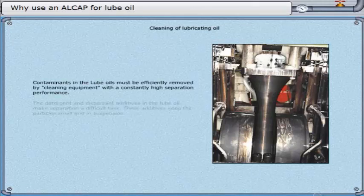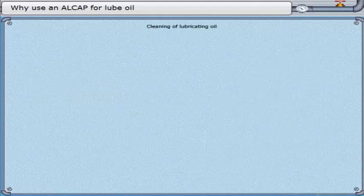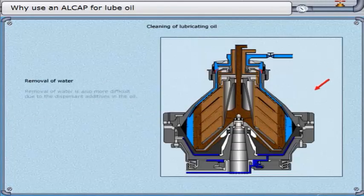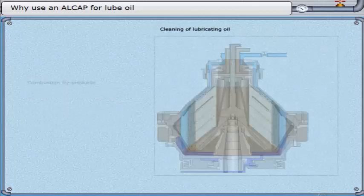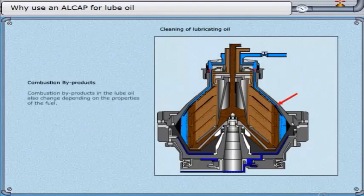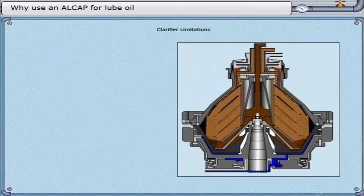Contaminants in the lube oils must be efficiently removed by cleaning equipment with a constantly high separation performance. The detergent and dispersant additives in the lube oil make separation a difficult task — these additives keep the particles small and in suspension to keep the engine crankcase clean. Removal of water is also more difficult due to the dispersant additives in the oil. In extreme cases, it is even possible that the lube oil picks up water from the water seal of a conventional purifier if the oil and water are brought into turbulent contact with each other. Combustion byproducts in the lube oil also change depending on the properties of the fuel, and separated sludge is stickier, which makes it difficult to discharge from self-cleaning centrifugal separators.